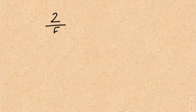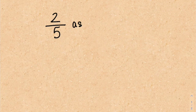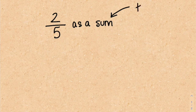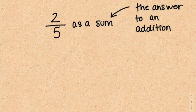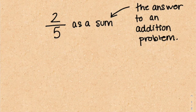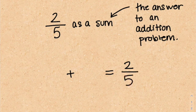Question 11 says: write the fraction 2 over 5 as a sum. We know that a sum is the answer to an addition problem. So that means whatever we do, we have an addition problem and we have 2 over 5 as our answer.